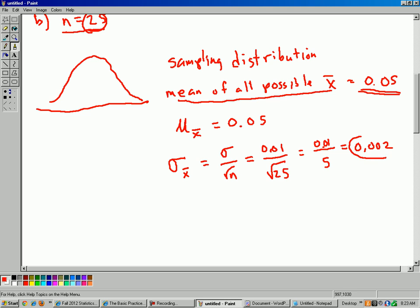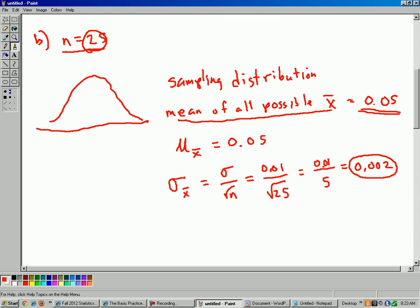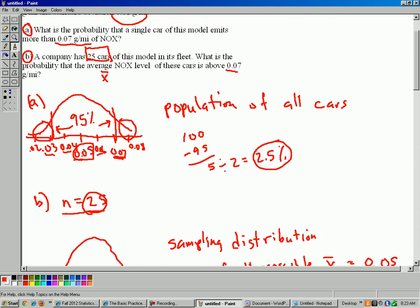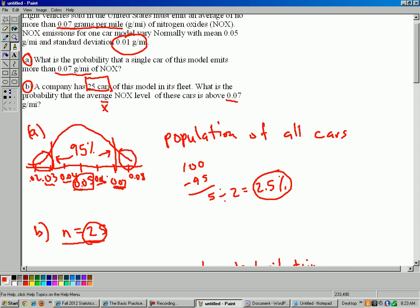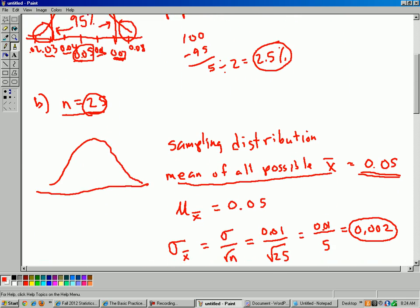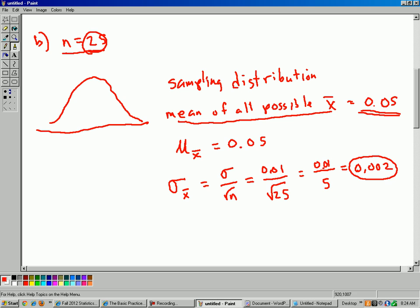A super small standard deviation of all the possible sample means. So, let's compare that to our original standard deviation of 0.01. So, the population standard deviation is 0.01, which is telling us that among the cars, there's a certain amount of variation among the cars. But, out of a sample of 25 cars, there's very little variation anymore among your sample means. You're almost guaranteed that your x-bar is going to be very, very close to the mean of 0.05.